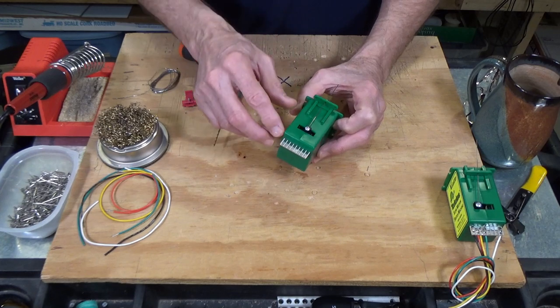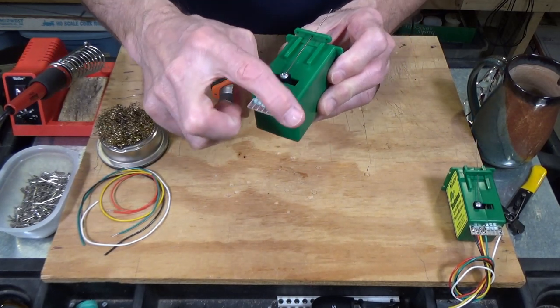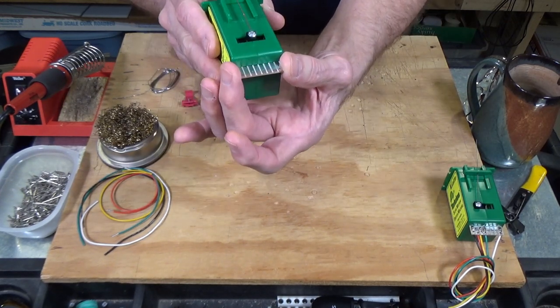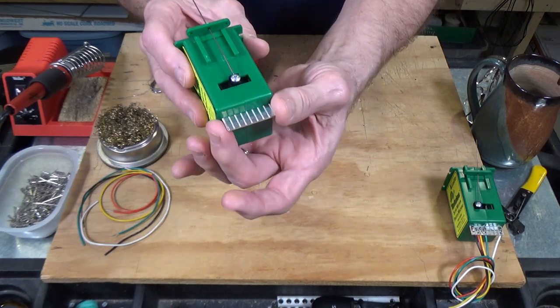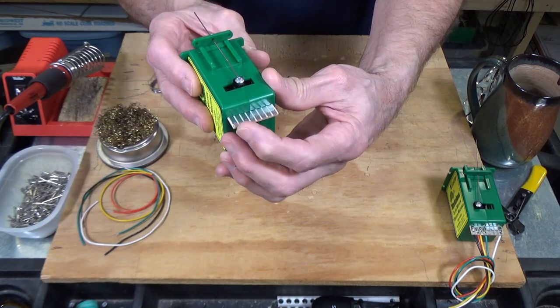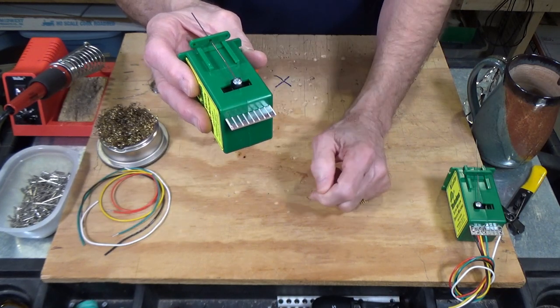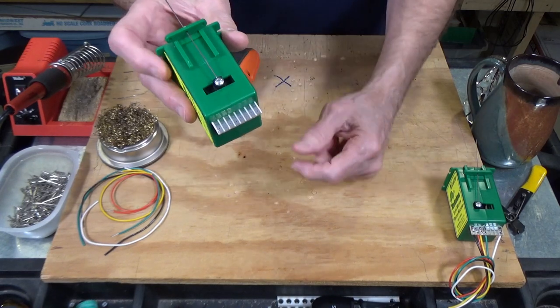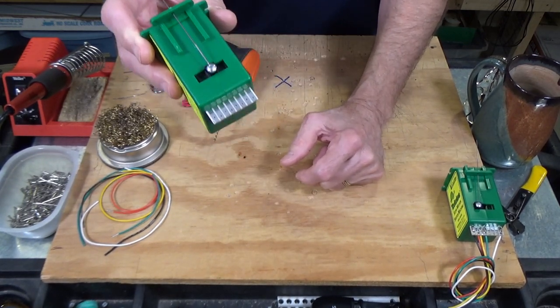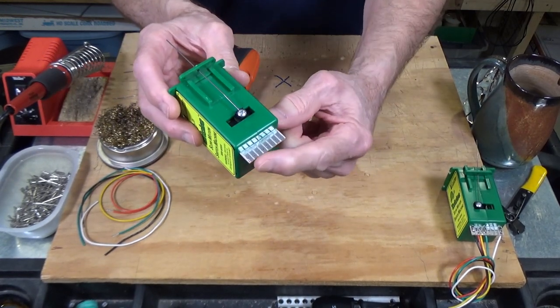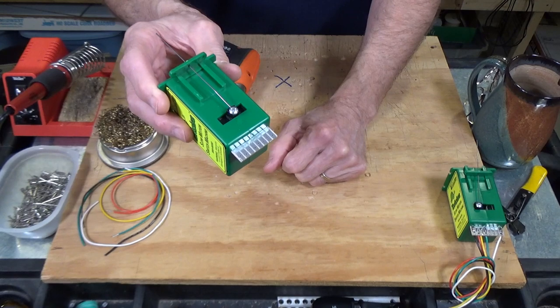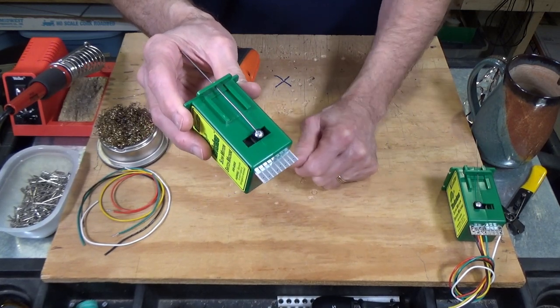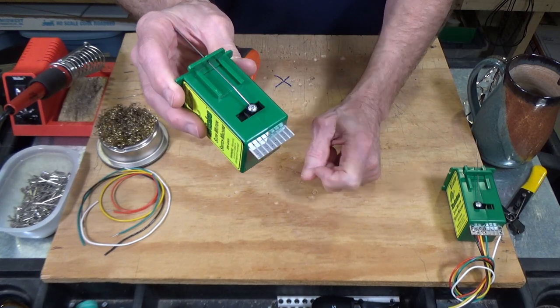The first thing I want to point out is that there are several little metal traces here that your wires have to be attached to. The two on the outside provide power to the tortoise switch machine motor itself. Then there's three here that provide power and connections to a single pole double throw switch. And there's another three here on this side that do the same thing. So you have in effect a double pole double throw switch built into the tortoise switch machine. I use one of these sets of switches to control the polarity of the frogs on my turnouts. So that when the switch changes position, the polarity of the frog is automatically set so that you won't get any shorts.